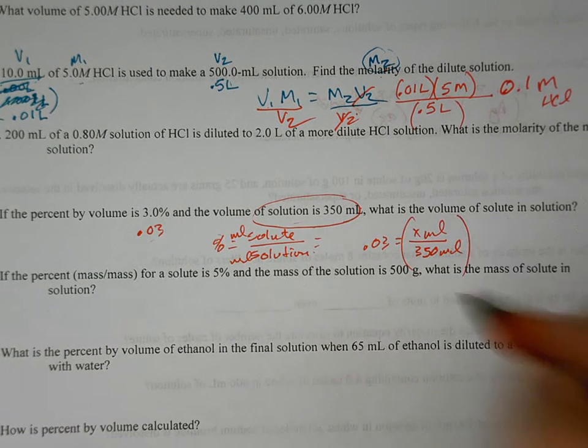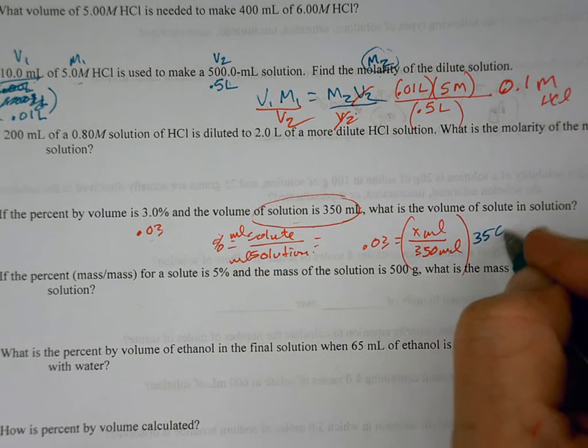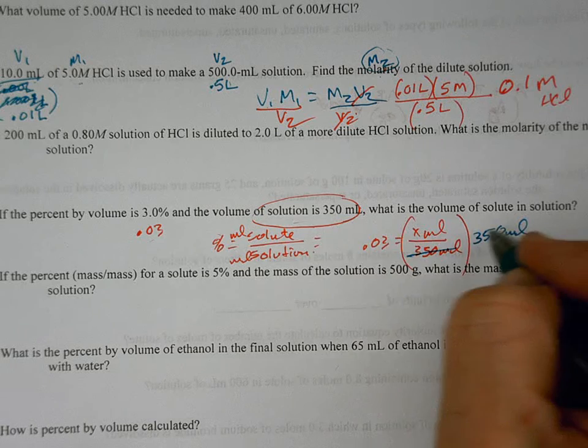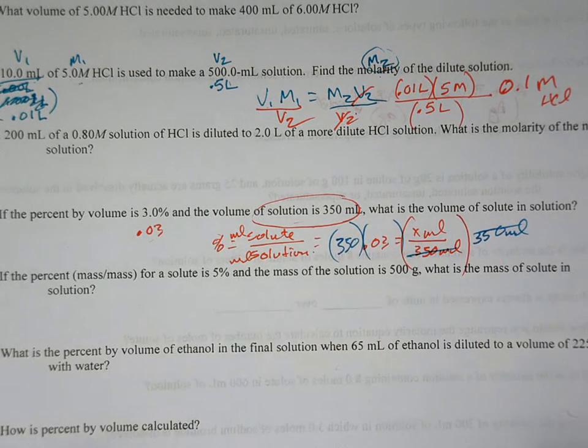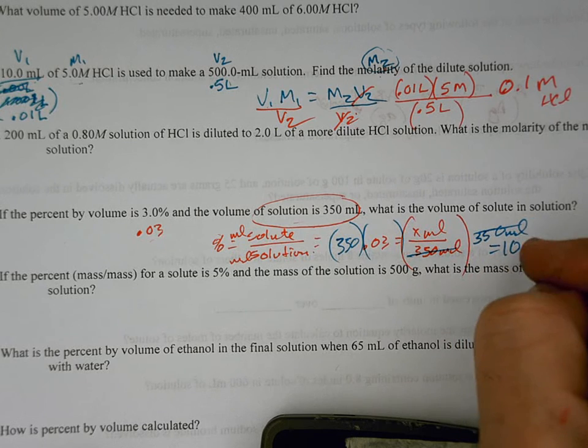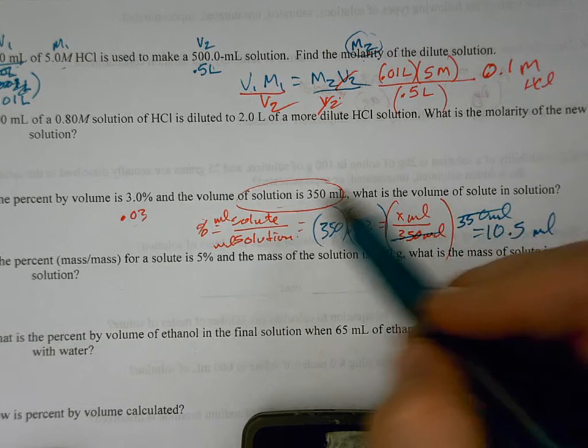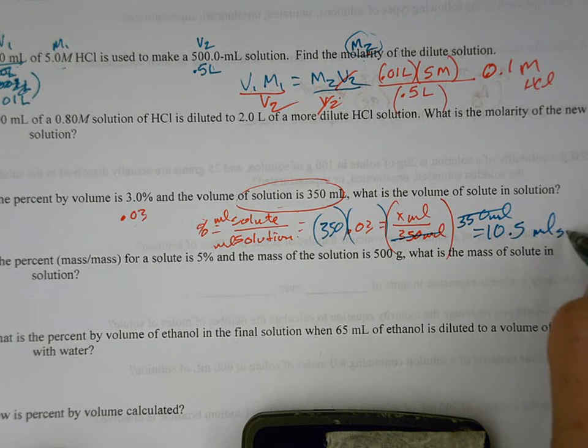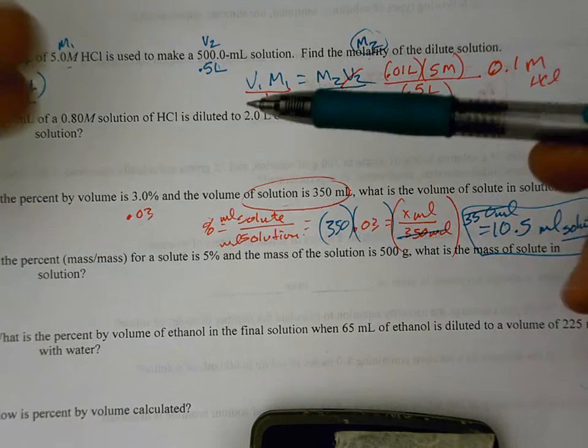And so now I'm going to multiply both sides of the equation by 350 to get rid of it over here. 350 milliliters. That'll cancel out. And then we've got to multiply that by 350. What's 350 times 0.03? 10.5 milliliters of solute. And always, when you have to do the calculation, go back and make sure you've answered the right question. What's the volume of the solute? 10.5 milliliters.